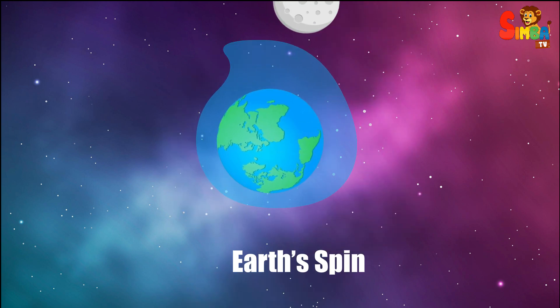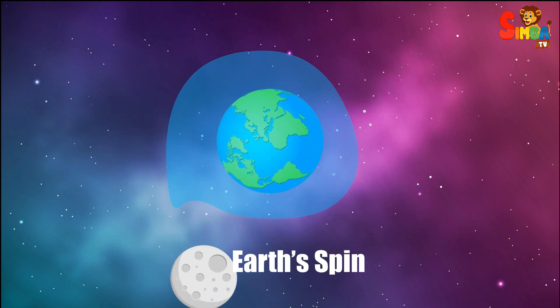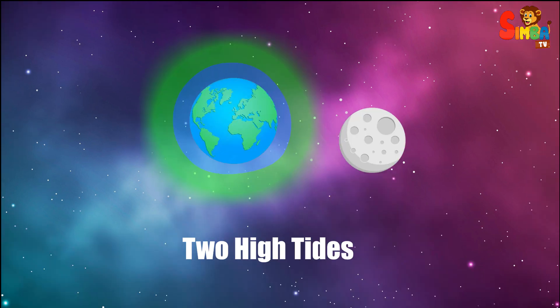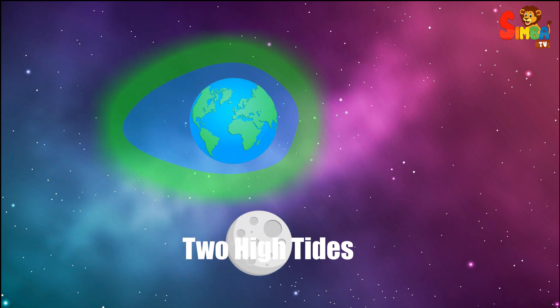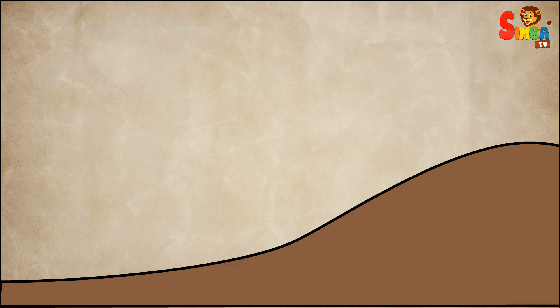Two high tides. There's another high tide on the opposite side of the earth from the moon because of the way the earth and the water move together. So there are always two high tides on opposite sides of the earth.